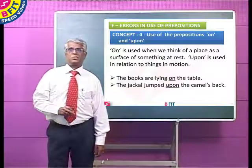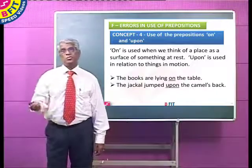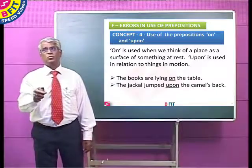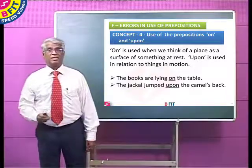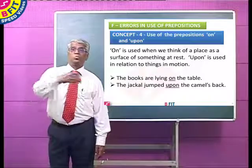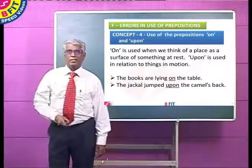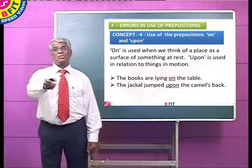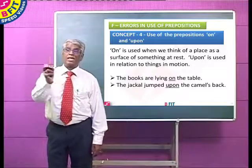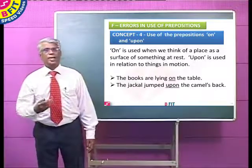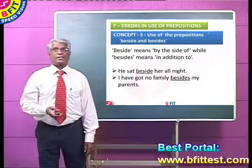The next set of prepositions is 'on' and 'upon.' Both are prepositions. 'On' is used when you think of a place as a surface of something at rest. If the thing you are talking about is moving, then you will use 'upon.' For example: the books are lying on the table — the table is at rest. The jackal jumped upon the camel's back — the camel may be moving and in motion.